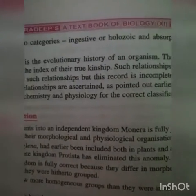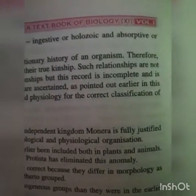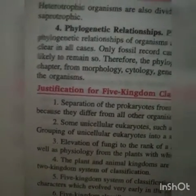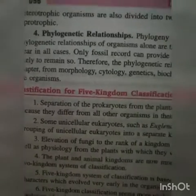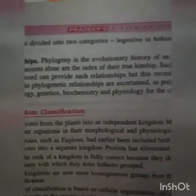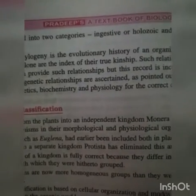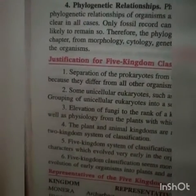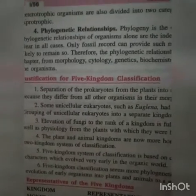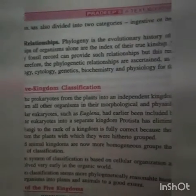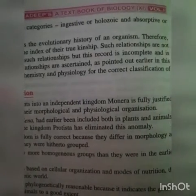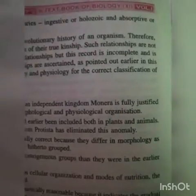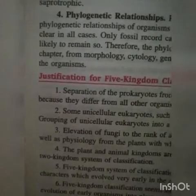Phylogenetic relationships are not clear in all cases. Only fossil records can provide such relationships, but this record is incomplete and likely to remain so. Therefore, phylogenetic relationships are ascertained from morphology, cytology, genetics, biochemistry, and physiology for the correct classification of organisms.